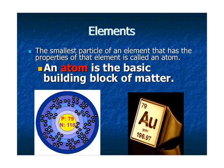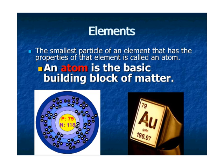The smallest particle of an element that has the properties of that element is called an atom. An atom is the basic building block of matter, like gold. We could have a gold atom, and it has certain physical and chemical properties. Go back and watch that video if you don't understand what physical and chemical properties are.